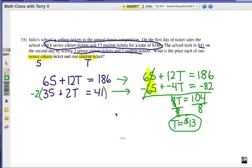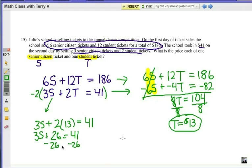Let's substitute it in one of our equations. Let's go ahead and choose the second one here. It looks like the numbers are smaller. So, 3S plus 2T, but T is $13, right? And then I'm going to have 41 as my total amount of sales. So, 3S plus 26 equals 41. Subtract 26 from each side. And eventually, I'm going to get senior citizen ticket is $5.